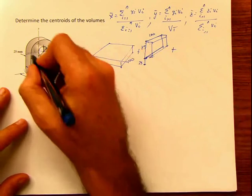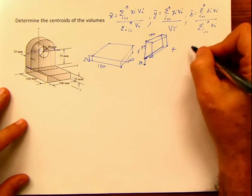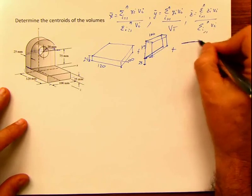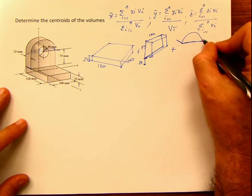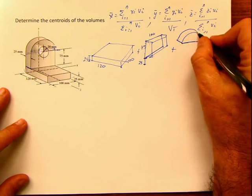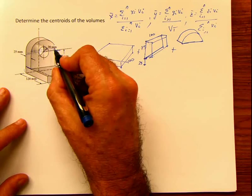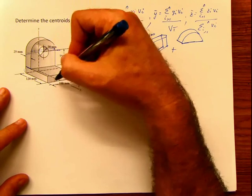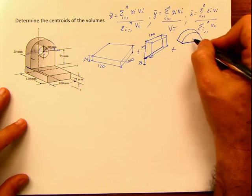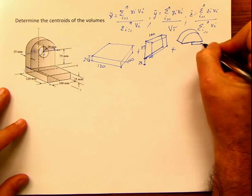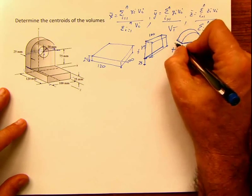On top of that comes this semicircular volume. The diameter is 100, so the radius is going to be 50 to each side. The thickness is 25 millimeters.